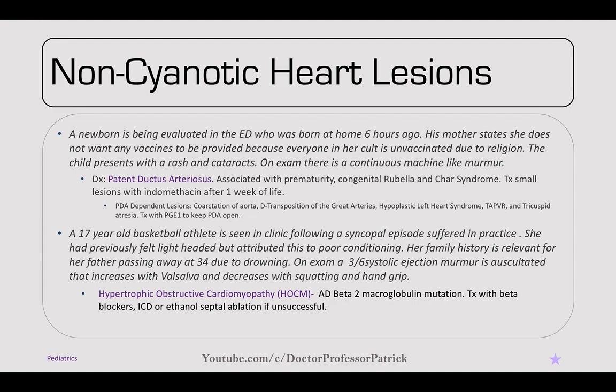A 17-year-old basketball athlete presents following a syncopal episode, with prior lightheadedness. Her father passed away at 34 due to drowning. On exam, there's a 3-out-of-6 systolic ejection murmur that increases with Valsalva and decreases with squatting and handgrip — opposite of typical murmurs because it increases with decreased preload. This is hypertrophic obstructive cardiomyopathy, or HOCM — an autosomal dominant beta-myosin heavy chain mutation. Treatment is beta blockers; extreme cases may need an ICD or ethanol ablation.